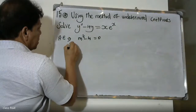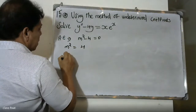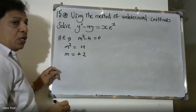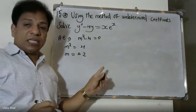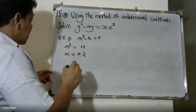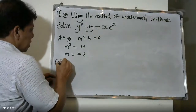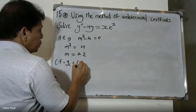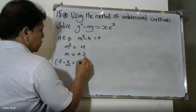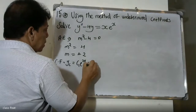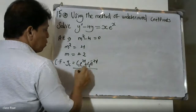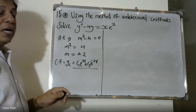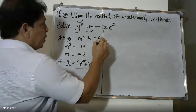m squared is equal to 4, and m is equal to plus or minus 2. Since the roots are real and distinct, we can write the complementary function: yc is equal to c1 into e raised to 2x plus c2 into e raised to minus 2x. Now we need to find the particular integral.